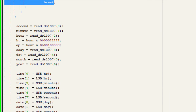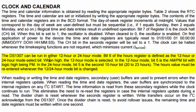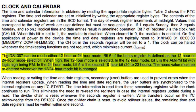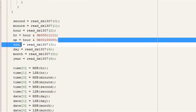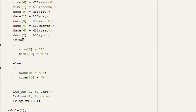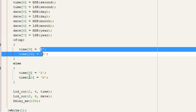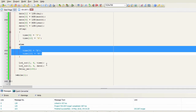According to the DS1307 datasheet, the device can run in 12-hour or 24-hour mode. Bit 6 of the hour register selects the mode — when high, 12-hour mode is selected. In 12-hour mode, bit 5 is the AM/PM bit (logic high = PM); in 24-hour mode, bit 5 is the second 10-hour bit for 20–23 hours. The hours value must be re-entered when switching modes. If the AM/PM bit is 1 we display PM, otherwise AM. Now let's build the project.